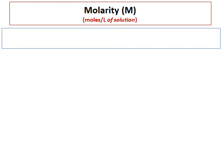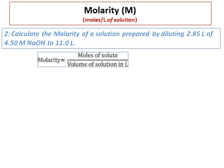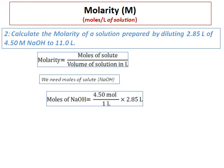Let's do one more molarity question. Calculate the molarity of a solution prepared by diluting 2.85 liters of 4.50 molar NaOH to 11.0 liters. This question is different — the grams of solute are not given; instead, a solution is being diluted. Molarity is still moles of solute divided by volume in liters. We can find moles of NaOH: 4.50 mol per liter multiplied by 2.85 liters.